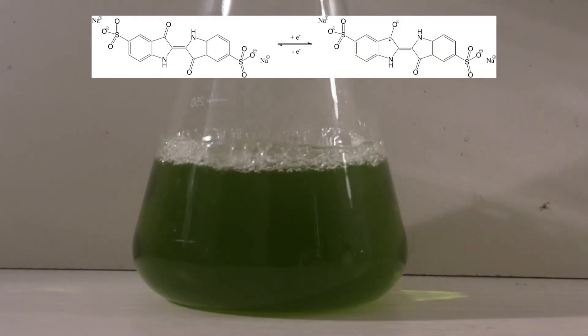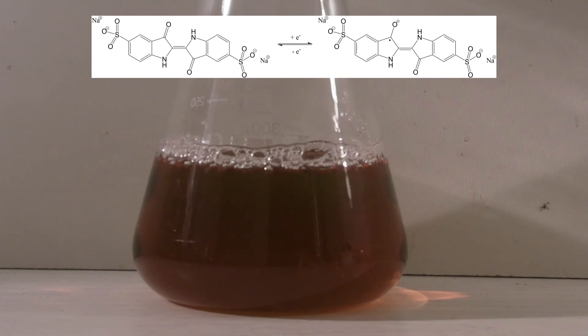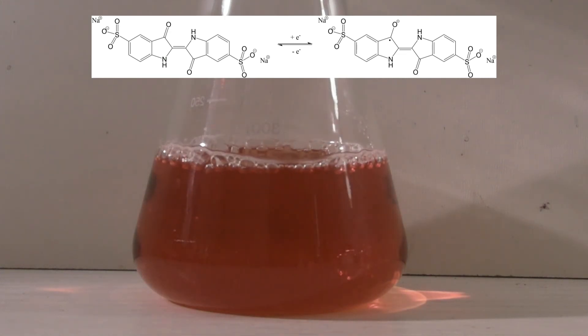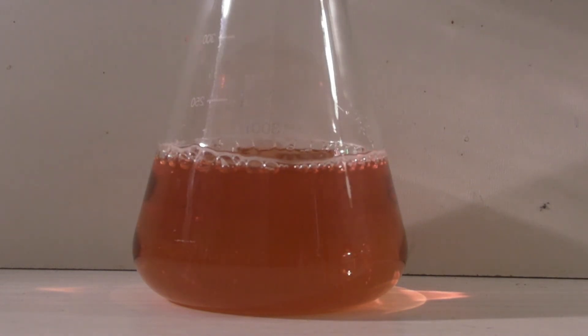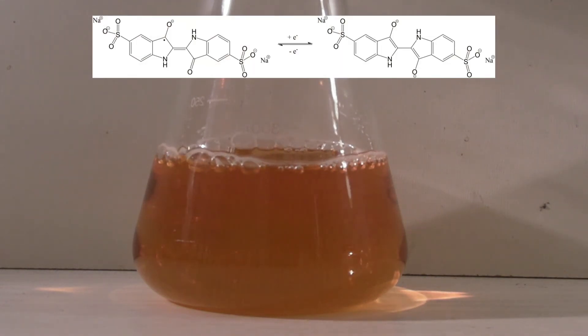The red color is due to a radical anion forming between the completely oxidized and reduced states. This is then reduced to the leuco form.